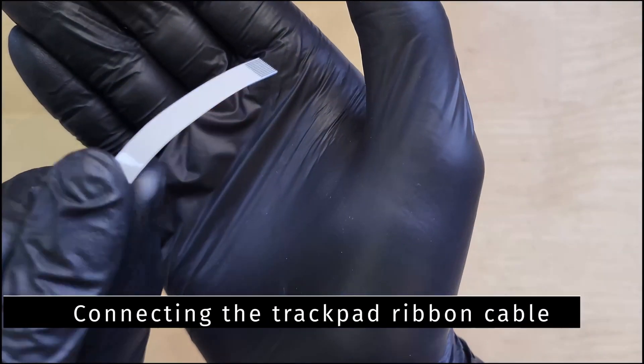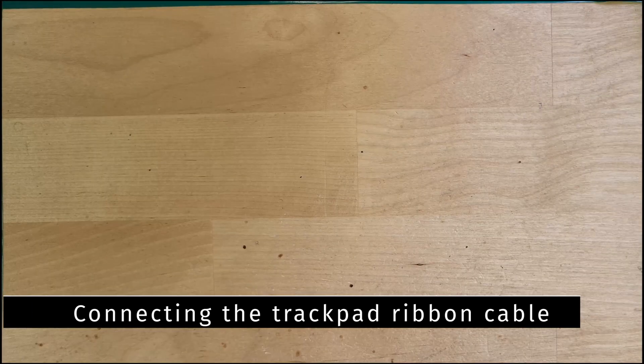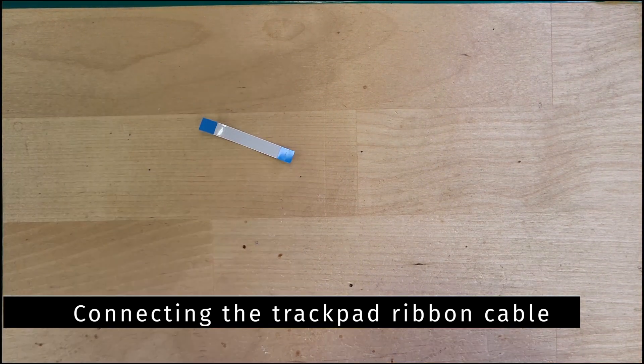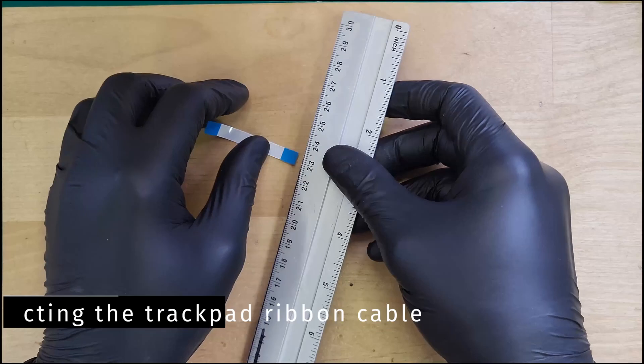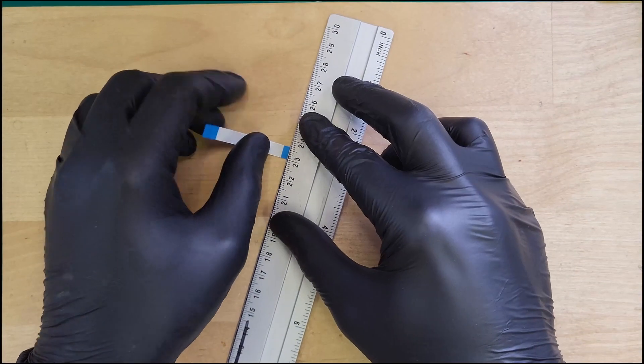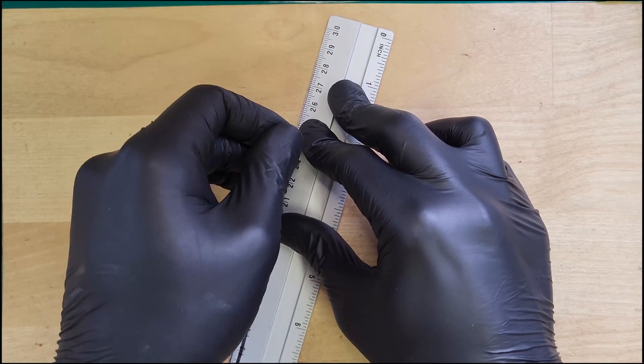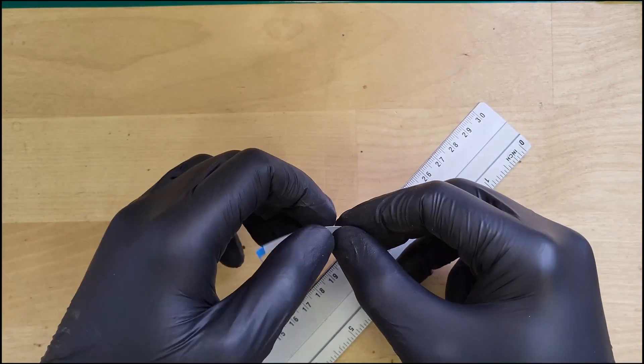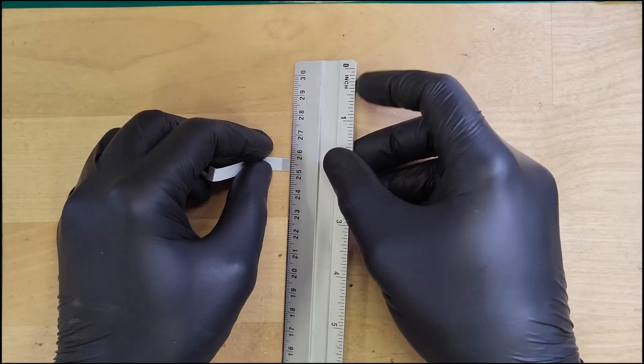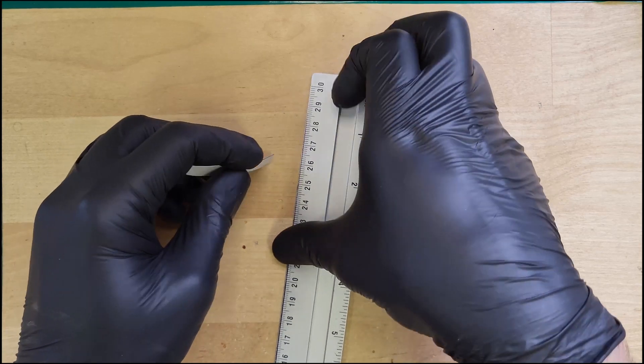Grab the ribbon cable. We are going to bend it, so you should find a flat surface with a sharp angle, for example a ruler. The ribbon cable needs to be bent 90 degrees on both sides in a very specific way. Make sure that you pause the video now, or that you take a look at the build guide.